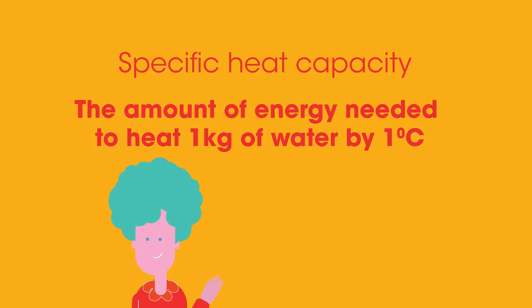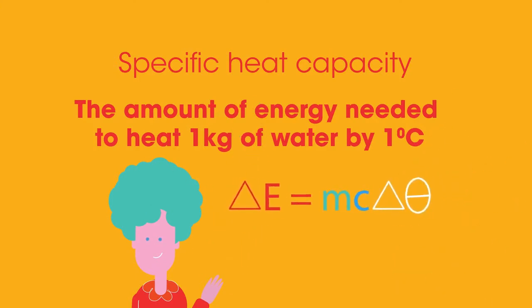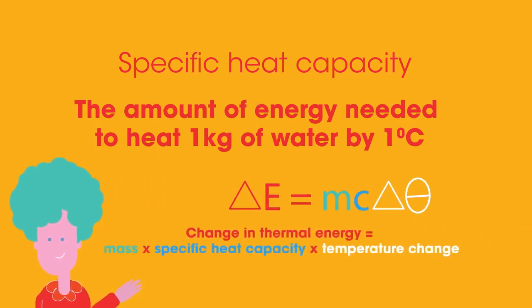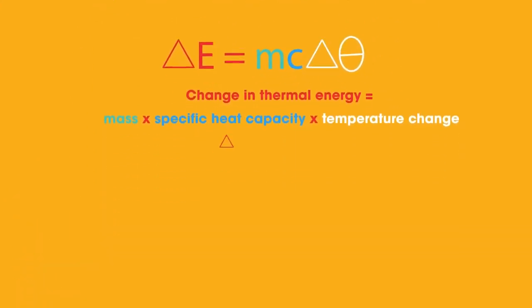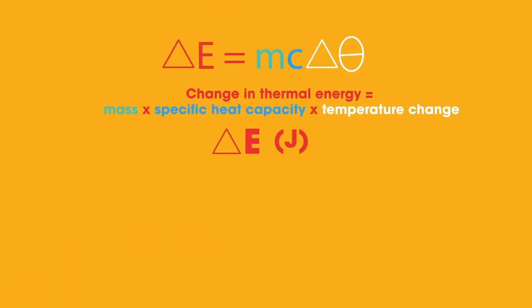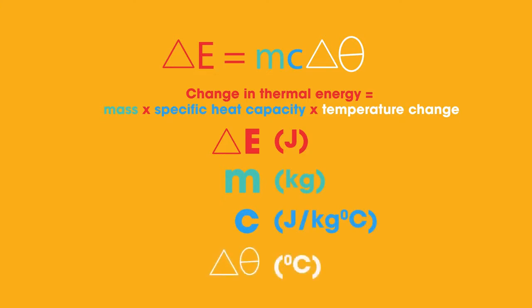These three quantities can be connected by a formula: ΔE = mcΔθ. Or, change in thermal energy equals mass times specific heat capacity times temperature change, where ΔE is measured in joules, m in kilograms, c in joules per kilogram per degree Celsius, and Δθ in degrees Celsius.